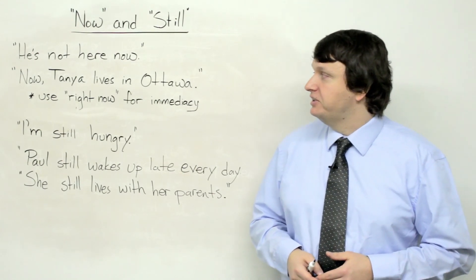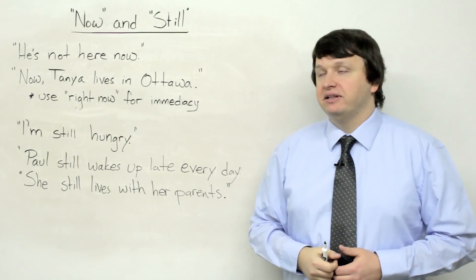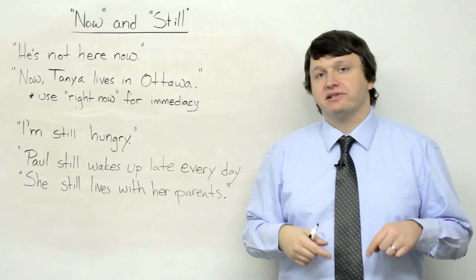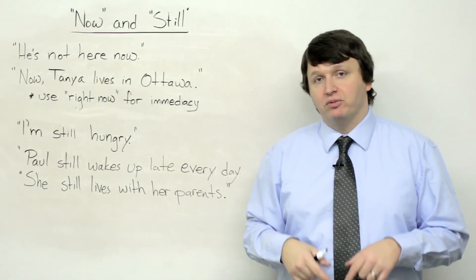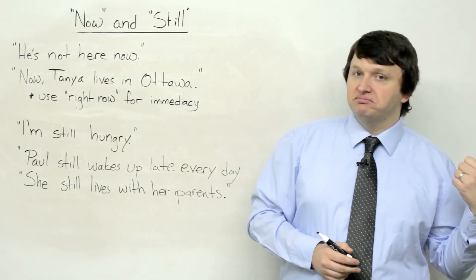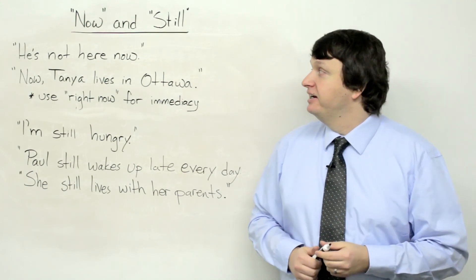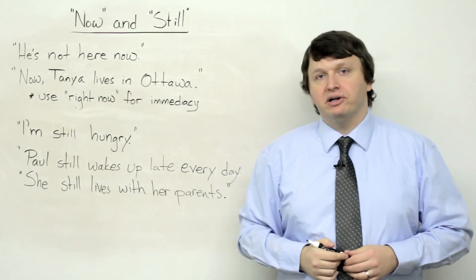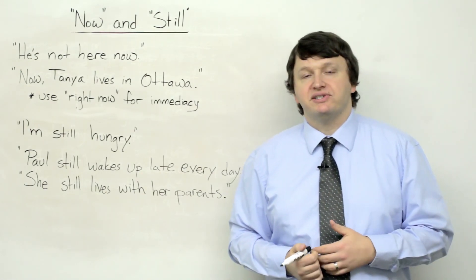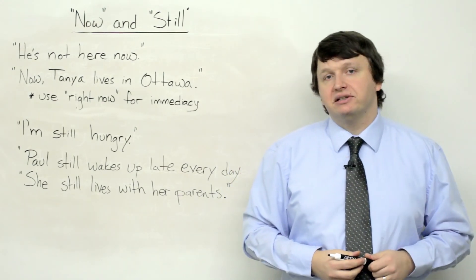So first we have: 'He's not here now,' and 'Now Tanya lives in Ottawa.' The word 'now,' most of you probably know, means at this very moment, this exact moment. So 'he's not here now' — before he was here, but now he is not. 'Now Tanya lives in Ottawa' — before maybe she lived in Toronto or Montreal, or maybe she was an international student from Germany. But now Tanya lives in Ottawa.